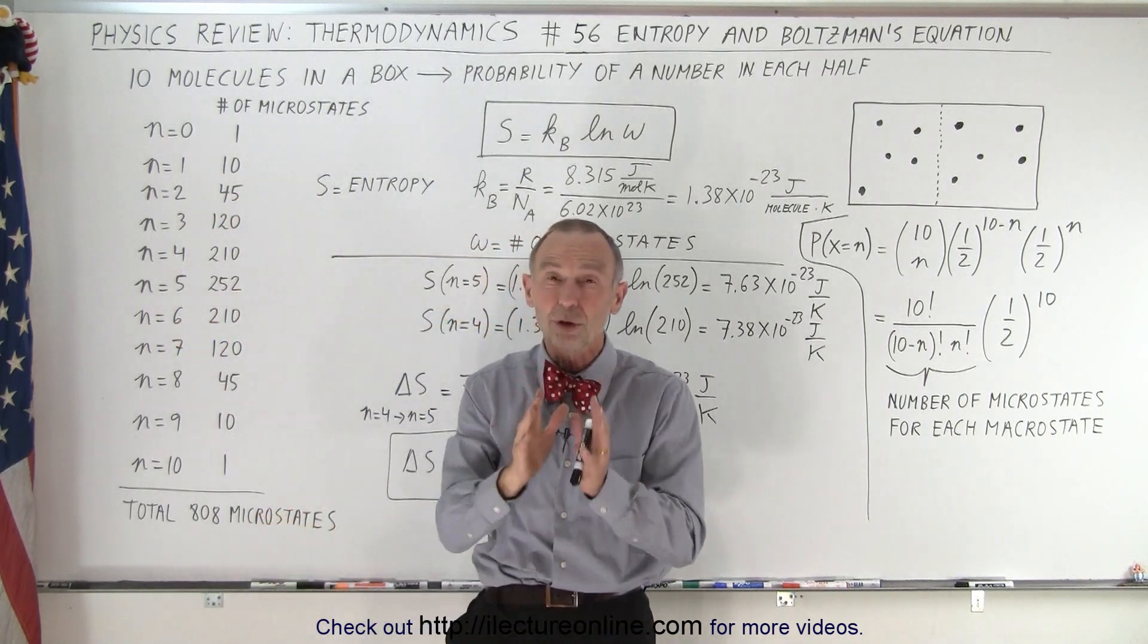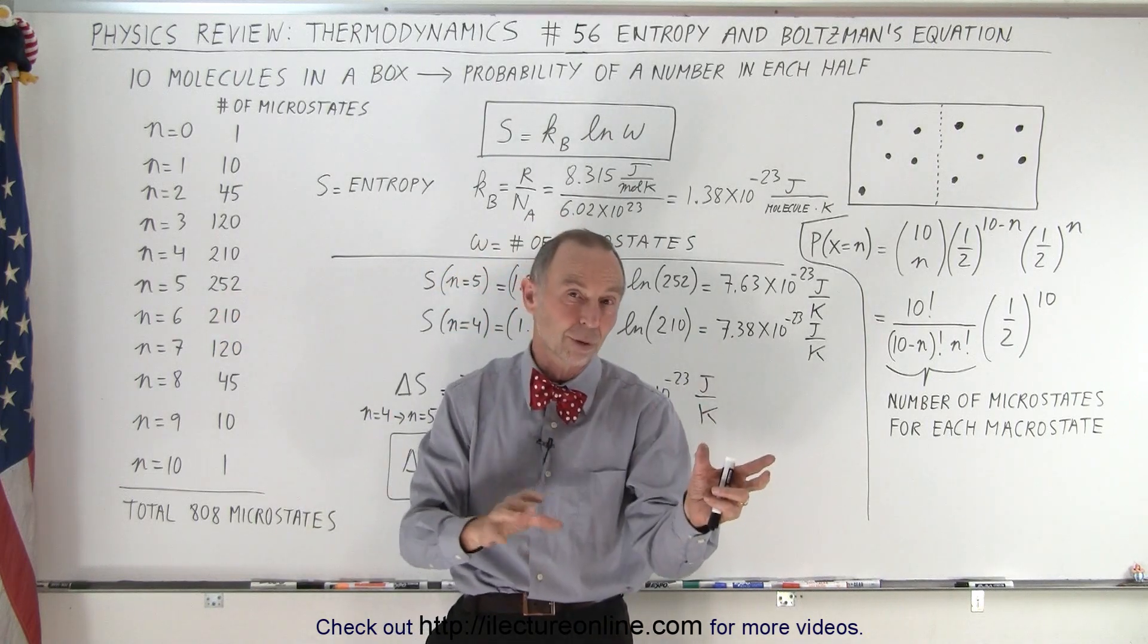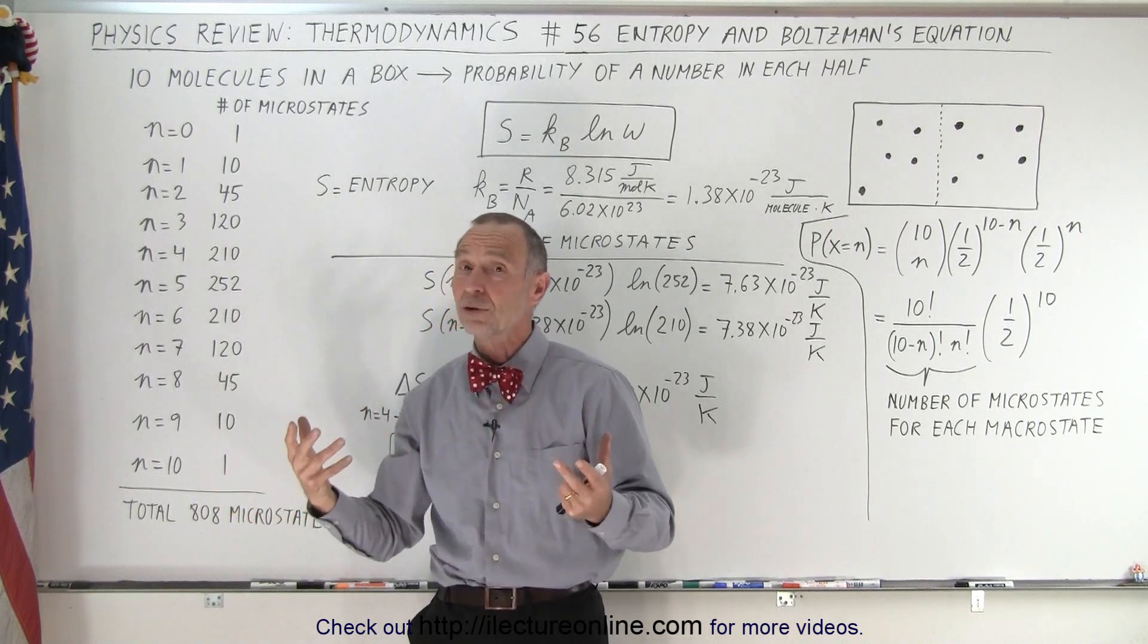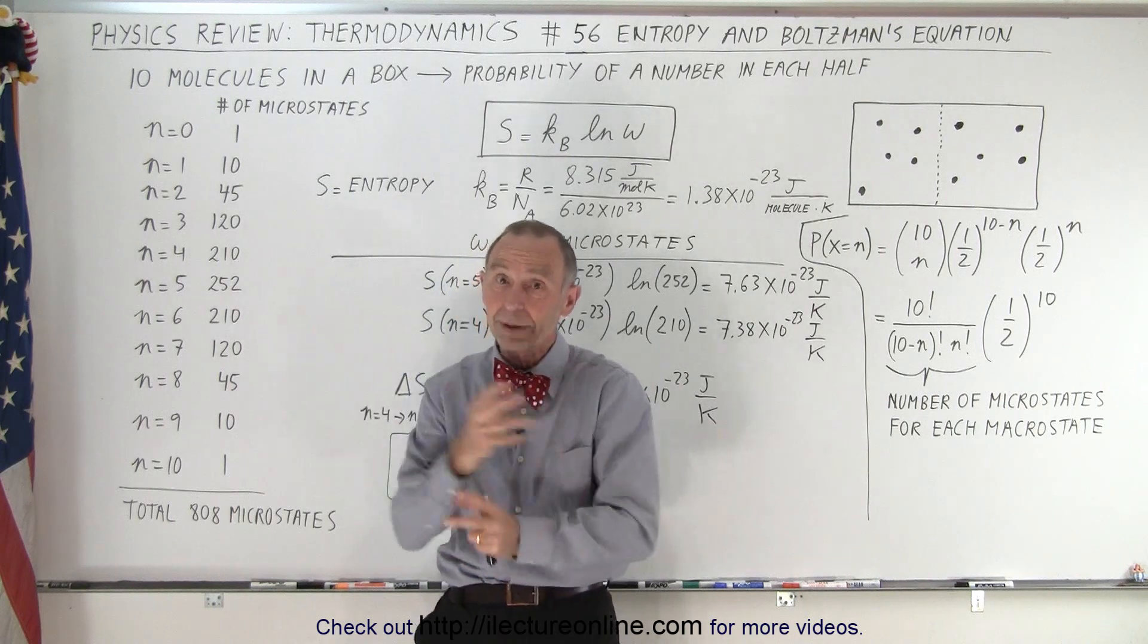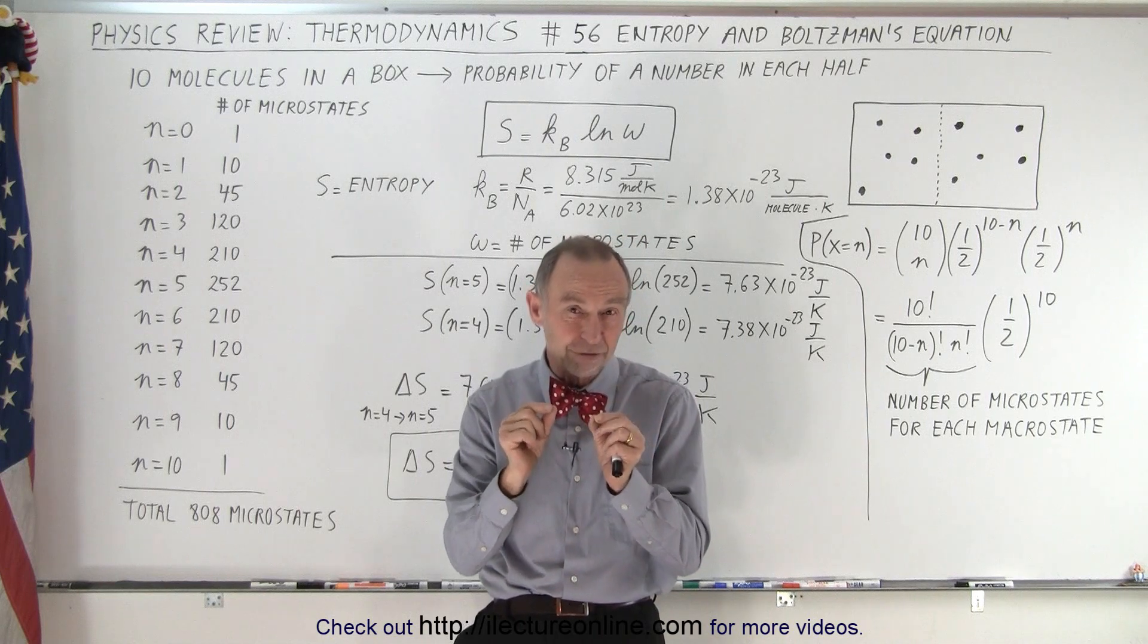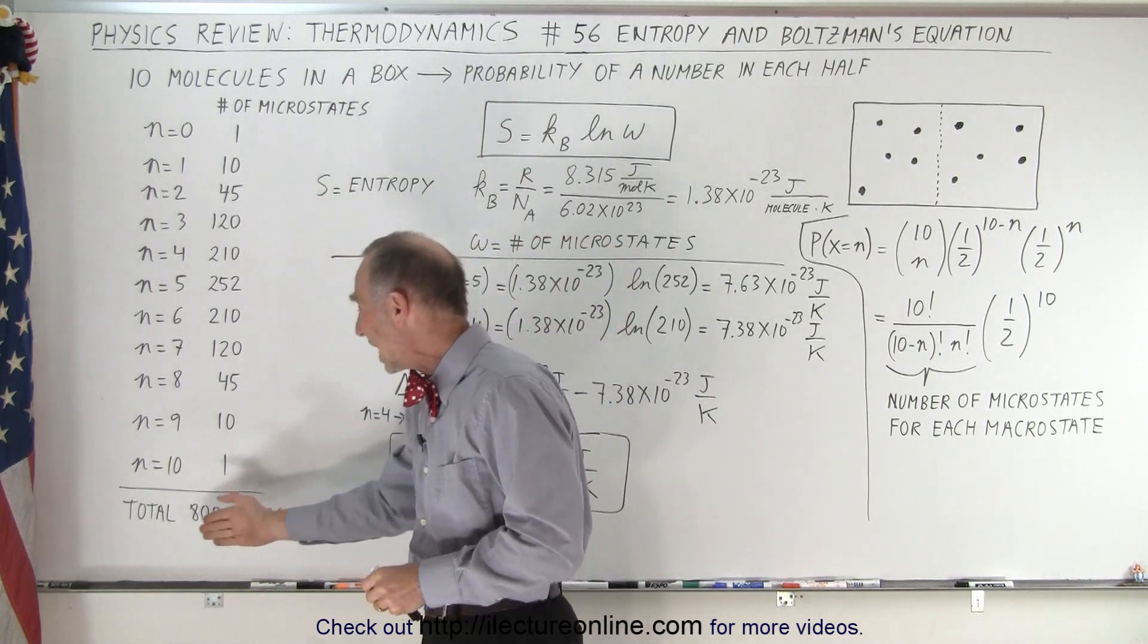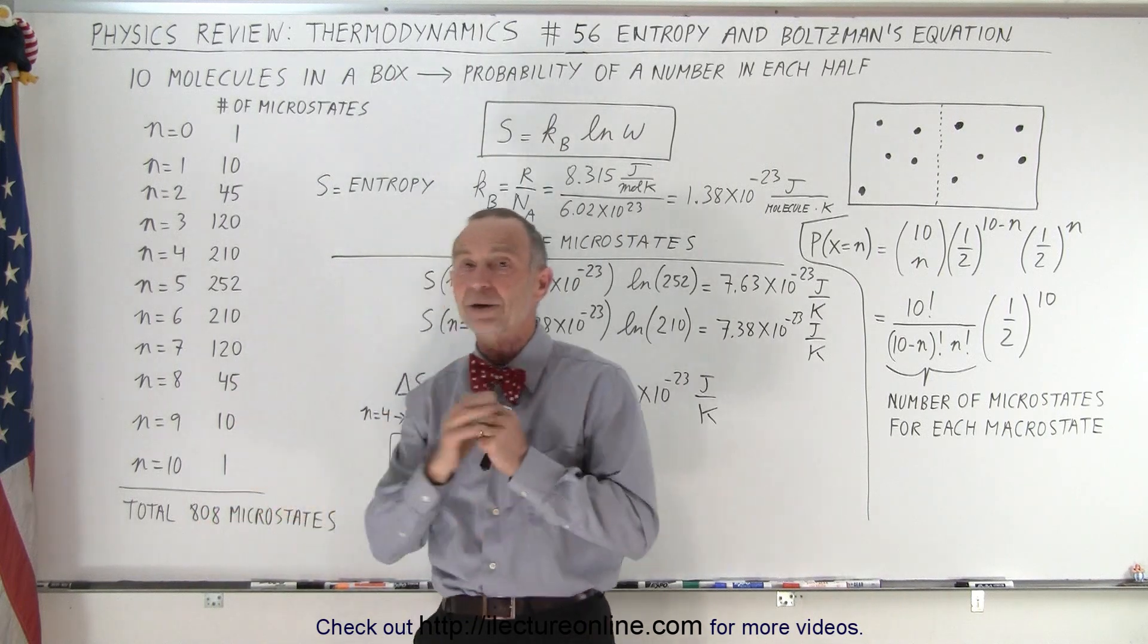Which means there are 252 microstates for the macrostate where there's 5 molecules on one side and 5 molecules on the other side. The reason why it's 252 is because if you give each molecule a name, there's a lot of different combinations in which you can have 5 on one side and 5 on the other side when you keep track of the individual molecules. So there's a total of 1024 microstates for the 11 macrostates.